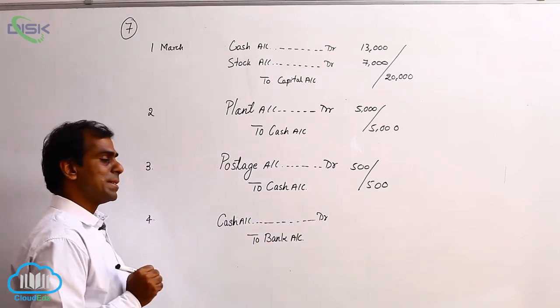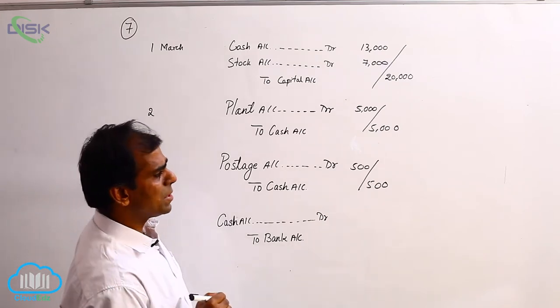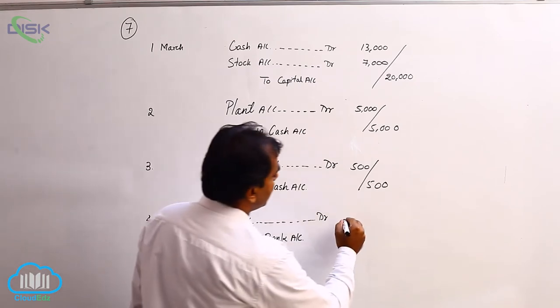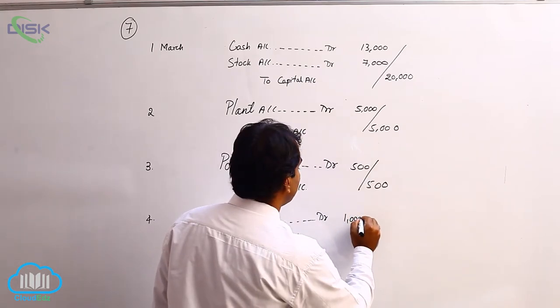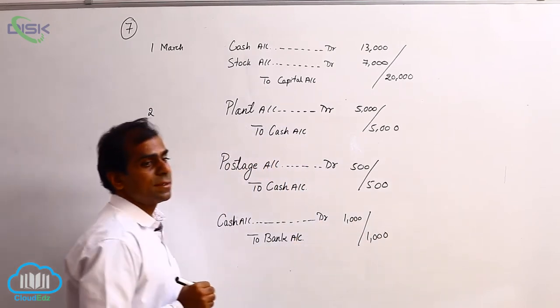Now, the amount being 1000. Your narration would be being cash drawn for office use.